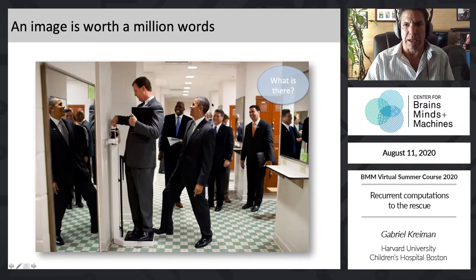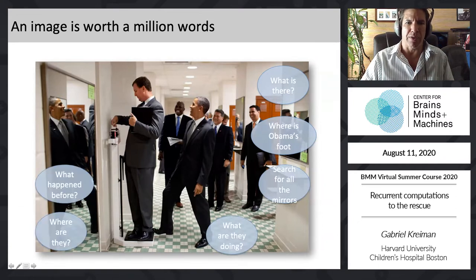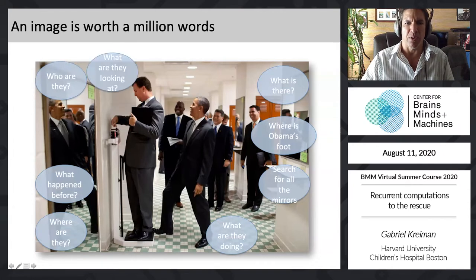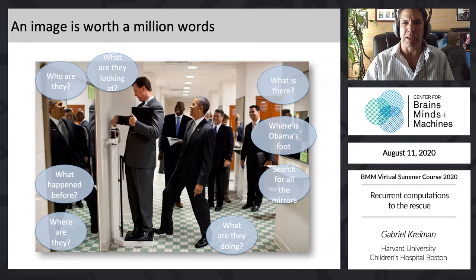We can ask questions about what is there, where is Obama's food, we can search for all the mirrors, ask what they are doing, where they are, what happened before, or who they are. And despite enormous progress in artificial intelligence, neuroscience, and computer vision, I think we are still extremely far from being able to understand a complex image like this one and all the nuances of everything going on.